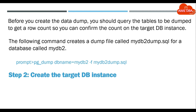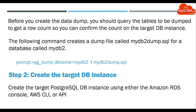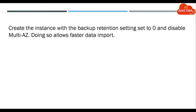Step 2: Create the target DB instance. Create the target PostgreSQL DB instance using either the Amazon RDS console, AWS CLI, or API. Create the instance with the backup retention setting set to zero and disable Multi-AZ. Doing so allows faster data import.